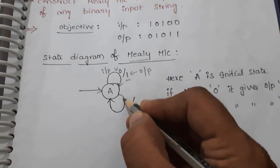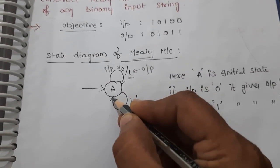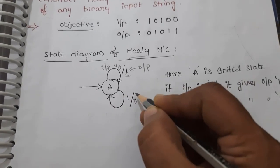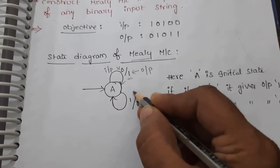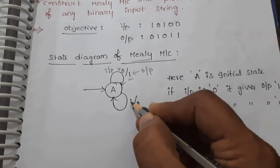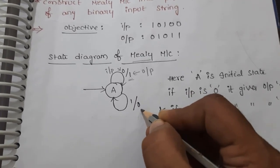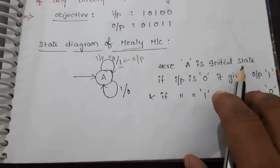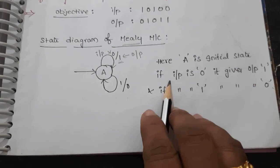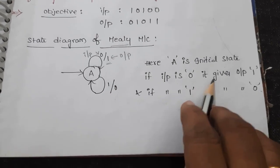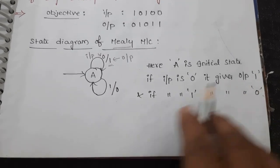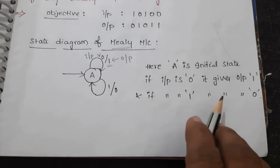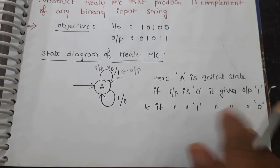Similarly, when one is the input at this state, its complement should be the output. So if one is the input, then zero will be the output. So here A is the initial state — if input is zero then it gives output as one, and if input is one then it gives output as zero.